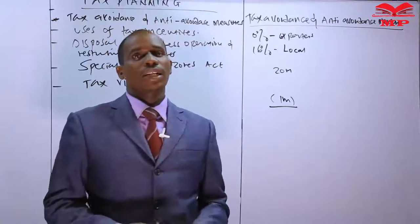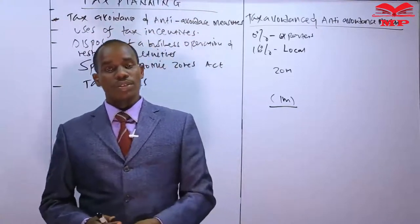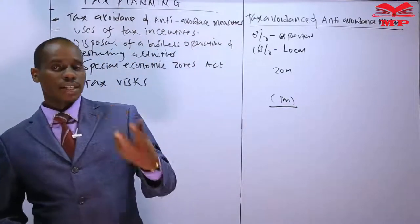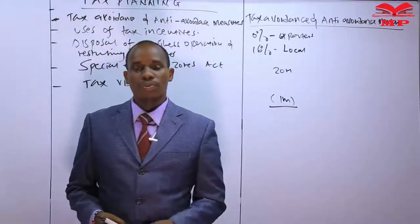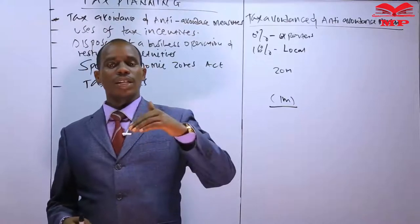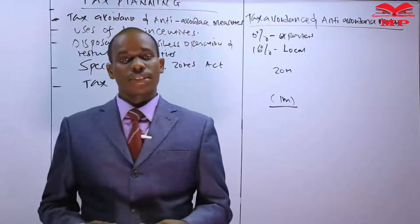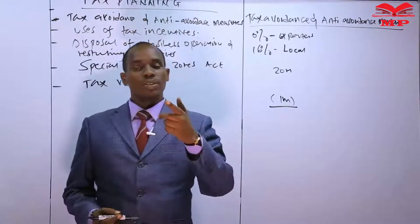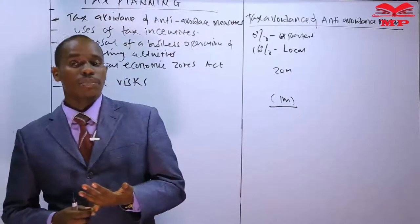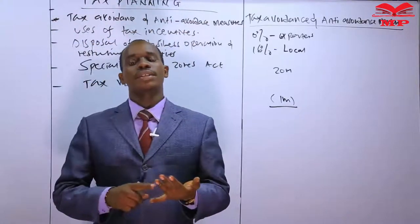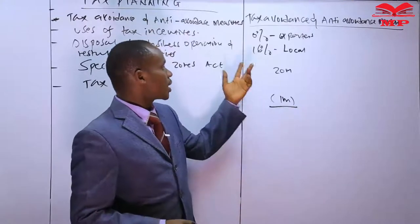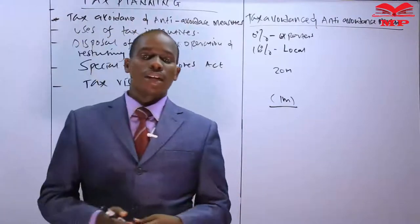Another example is where a child is employed in a company owned by the parents and is receiving a very high salary. It is not possible for the Commissioner to have a tax contract with a minor, so if this child is earning high income but not paying tax, the Commissioner will reject such a transaction. The Commissioner will either treat that salary as a non-allowable expense or have that income taxed on the parents.